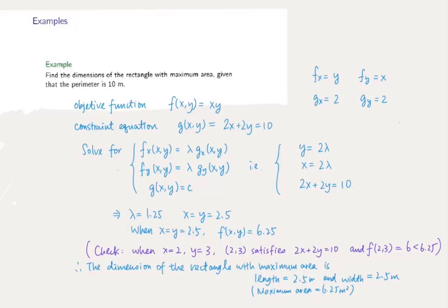In our case, we get lambda to be 1.25 and x equals y equals 2.5. At this position, the function output gives 6.25. We can check whether this is actually a maximum value by considering some other points and see whether the output is less than 6.25.